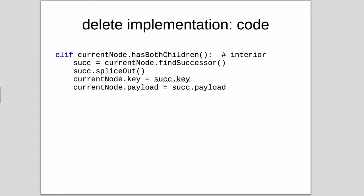So here's the code for delete in the case where you have two children. So if we have two children, then we get the find successor, so we find the successor, we splice it out, so it links, it basically deletes it from the tree, and then we set the current node, which we found to delete, to the key and the data from the successor, and that's it.